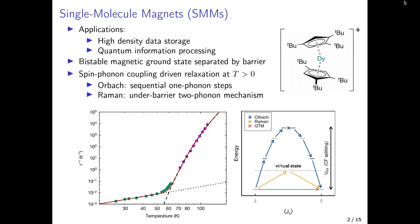There are different relaxation mechanisms present in SMMs. I'm going to look at the Orbach and Raman relaxation, which are both driven by spin-phonon coupling, meaning that at finite temperature, vibrations in the environment excite electronic states. For example, in the Orbach process there is sequential excitation by one phonon absorption and emission to traverse the barrier, while for the Raman process there is an under-barrier concerted two-phonon emission and absorption.